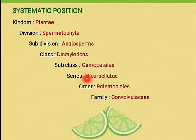Convolvulaceae family systematic position: two carpels are present, ovary superior, stamens are epipetalous, alternate with petals. That means stamen is always equal in number to the petals.